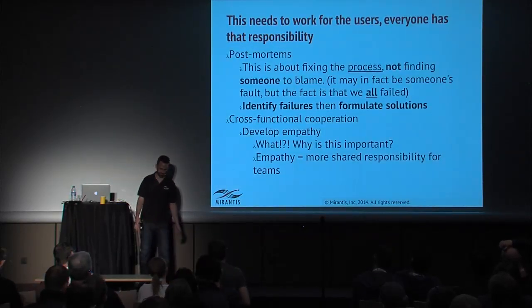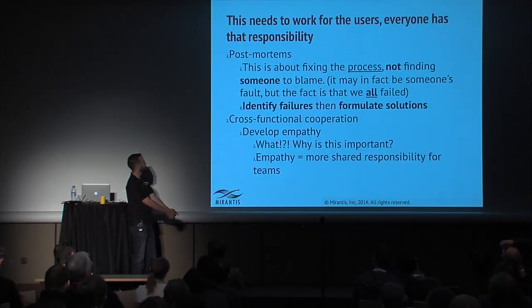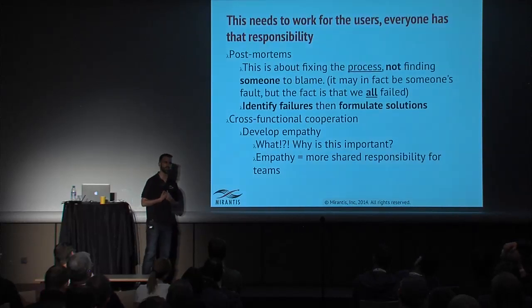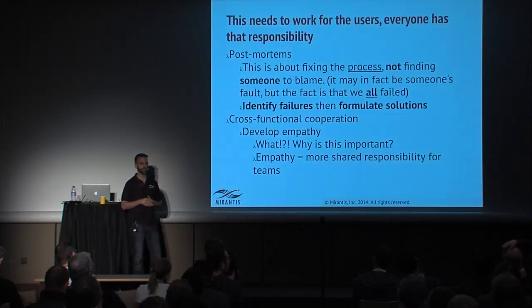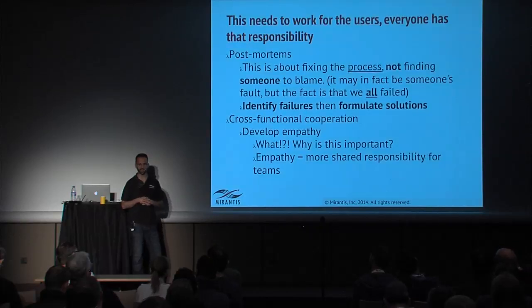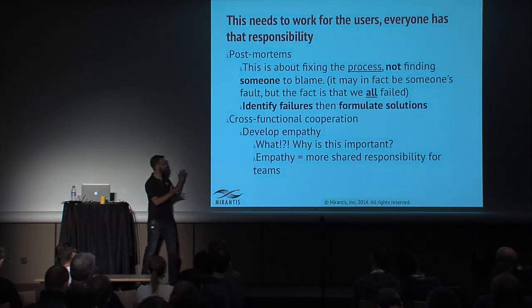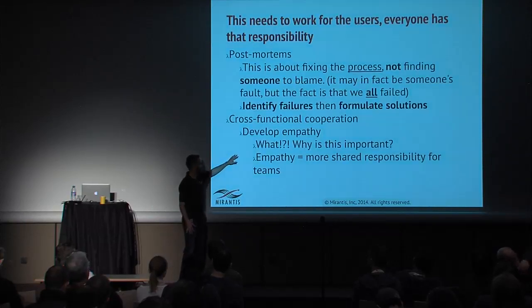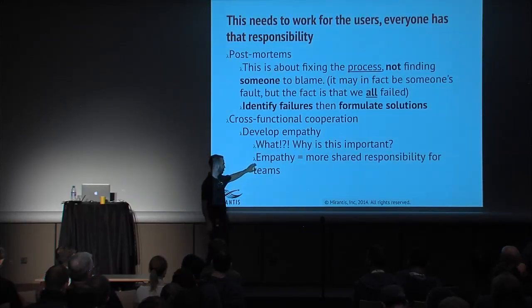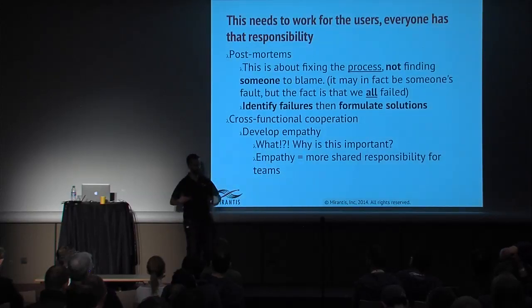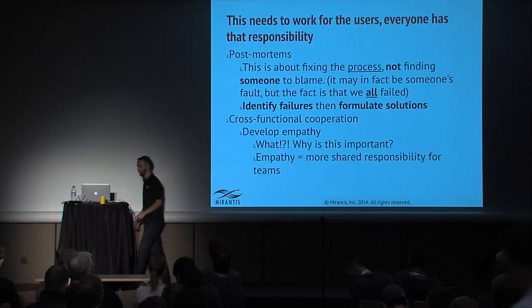The solution to the PowerDNS example was: we don't deploy Mike's RPMs unless he's committed them to the repo and built them using the official build process. We're also trying to foster cross-functional cooperation through empathy — empathy generates shared responsibility and a sense of team. Everyone is responsible, everyone is going to do what they can to make sure the product is delivered.